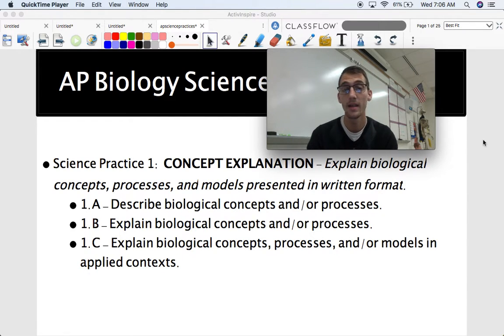And there's three different sub practices within science practice one. One A, describe biological concepts and or processes. One B, explain biological concepts and or processes. And then one C, explain biological concepts, processes, and or models in applied context. So this is going to be asking you to do a lot of the same stuff. And so is science practice two, except that's going to be more with a visual representation, a model, a diagram, a graph, that kind of stuff. All right, so let's get started.